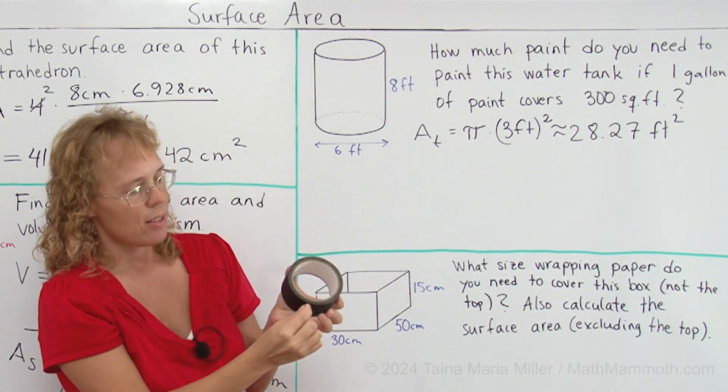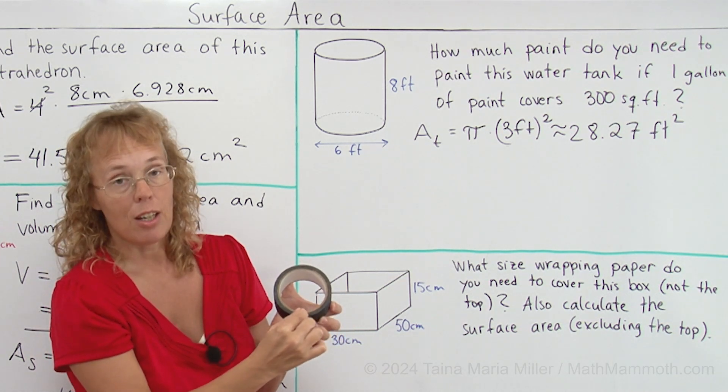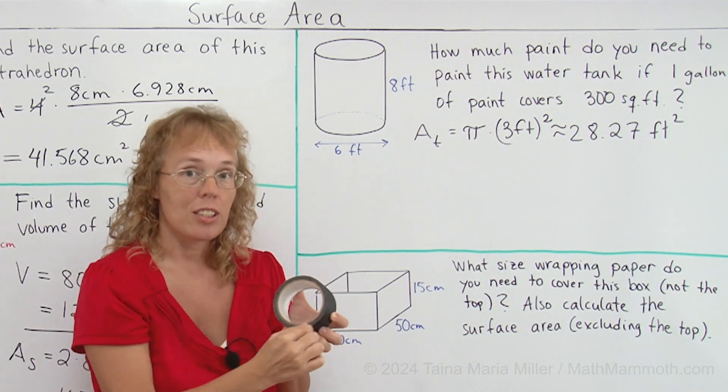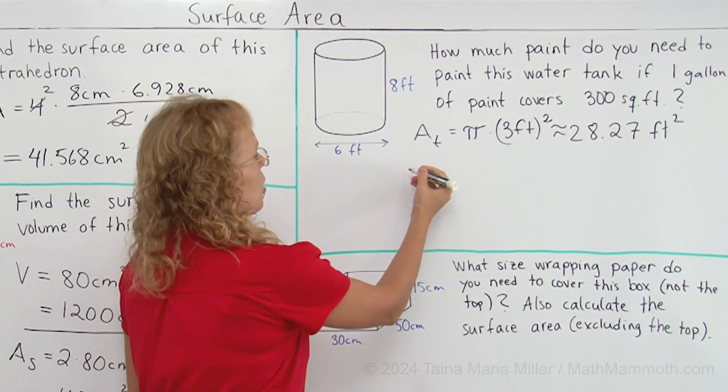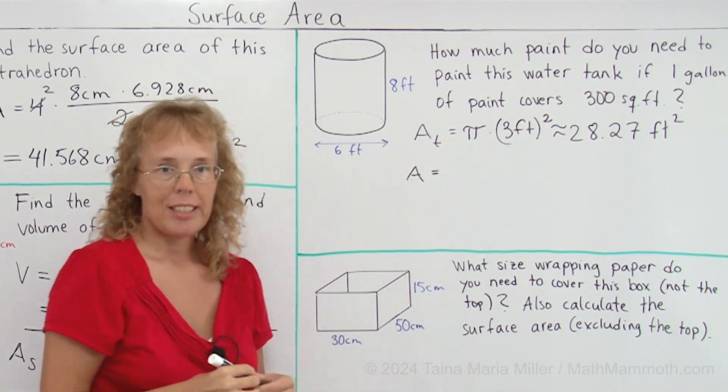But what about the other dimension of the rectangle? It would be all the way around here. This length here is the other side of the rectangle however long this is, that is of course the circumference of the circle.